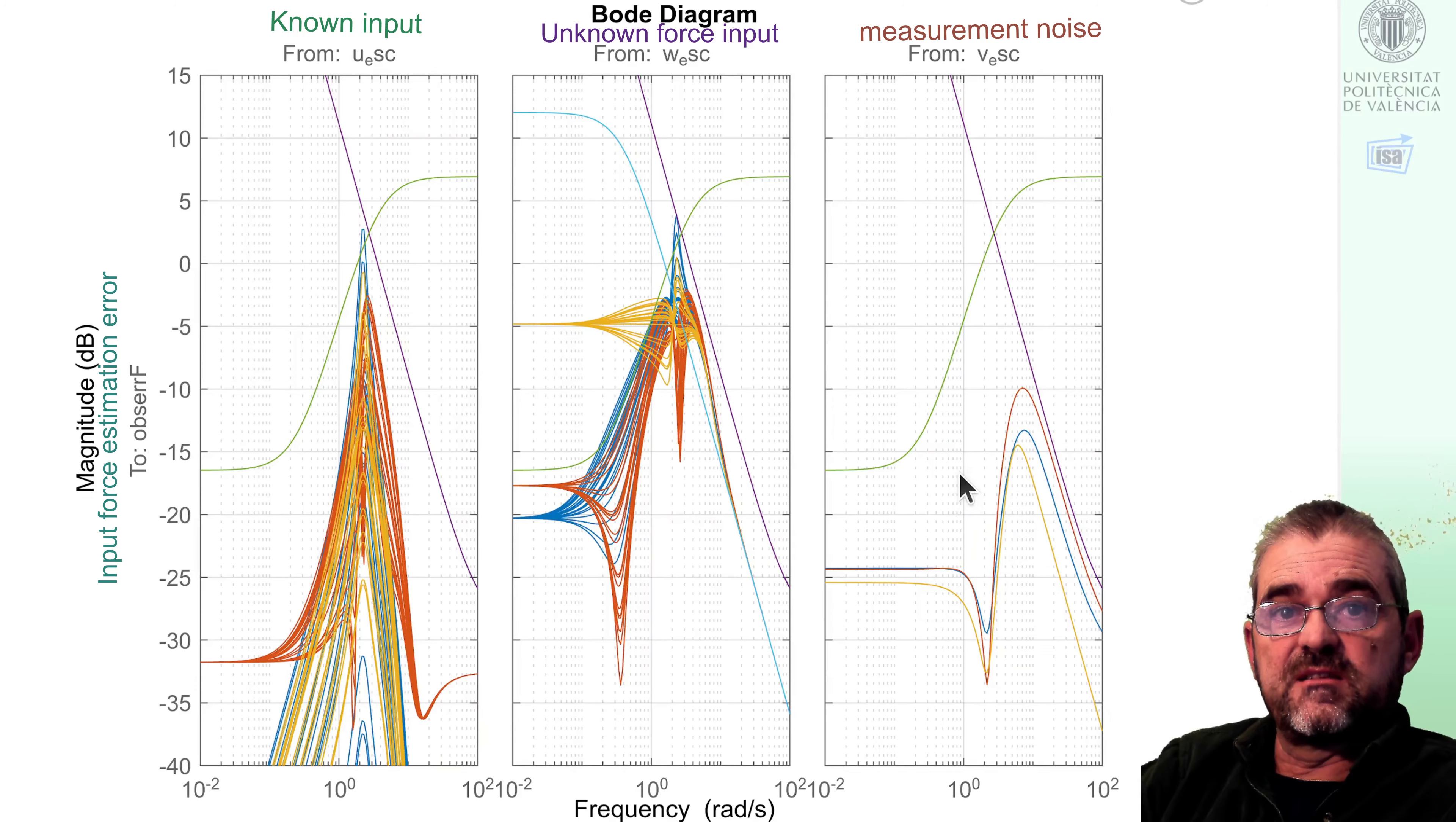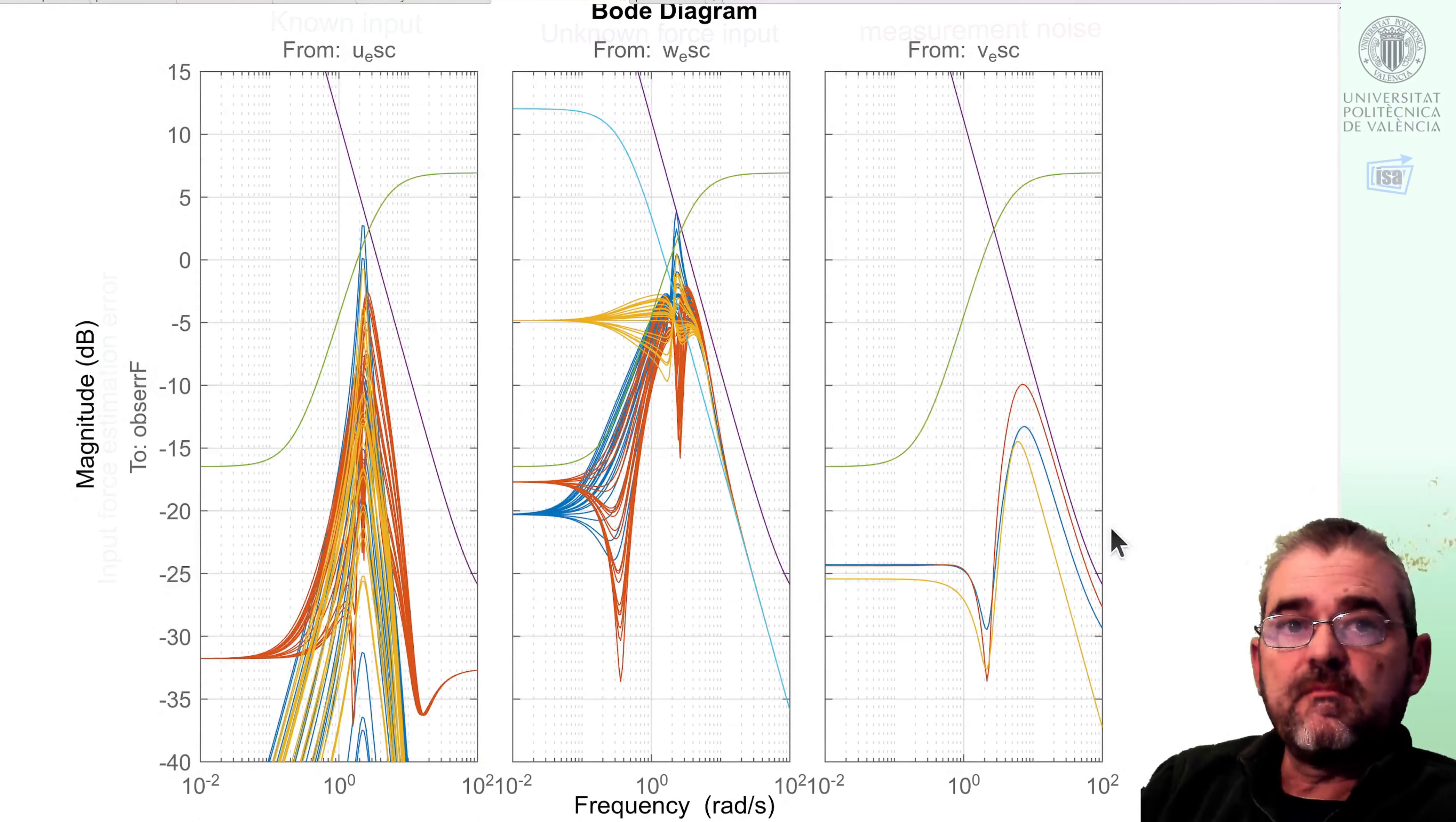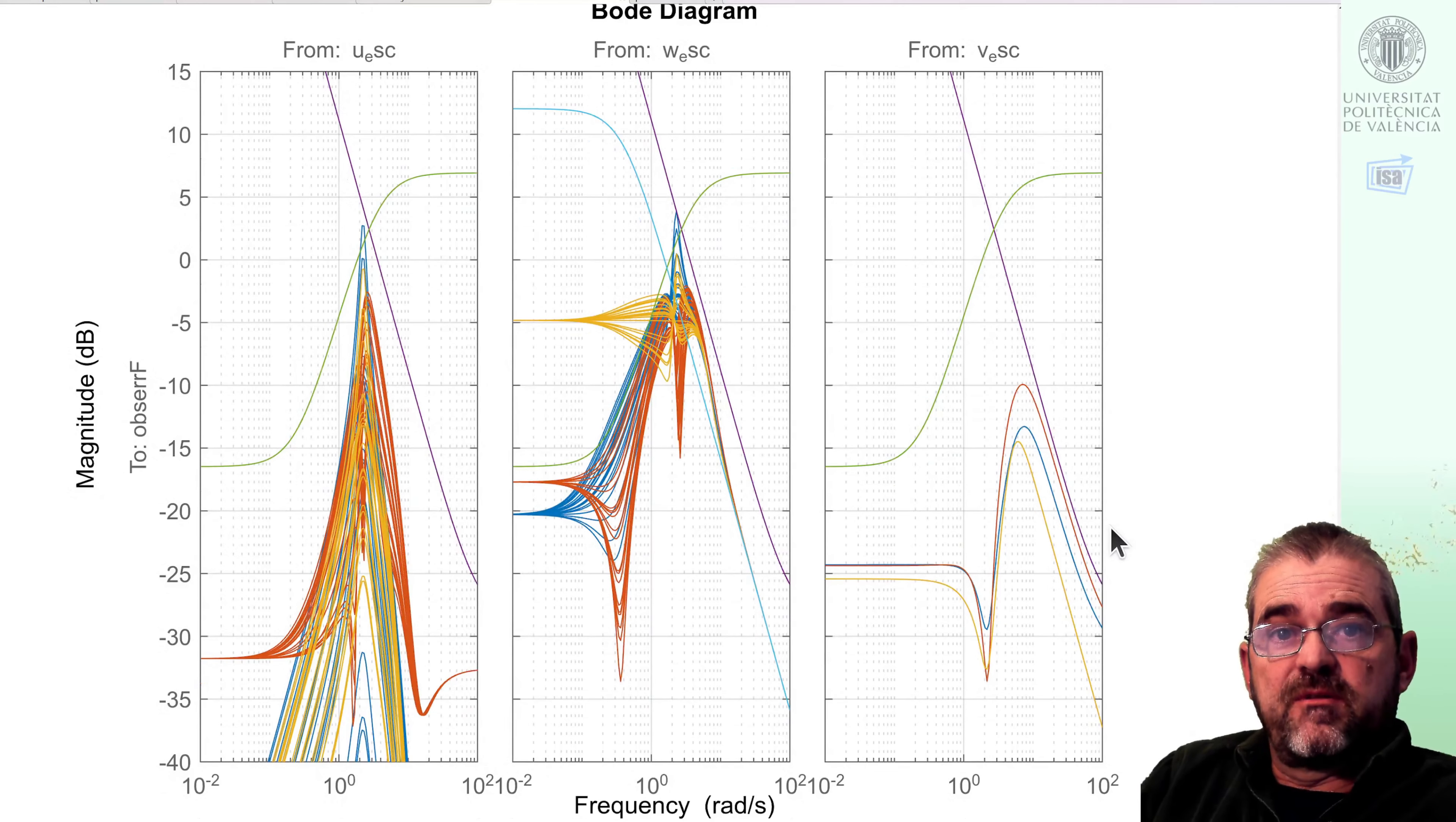As measurement noise does not go through any uncertainty, then this Bode diagram is identical to the nominal case.